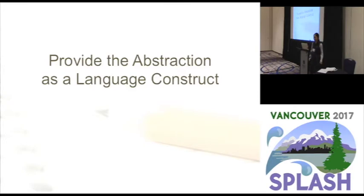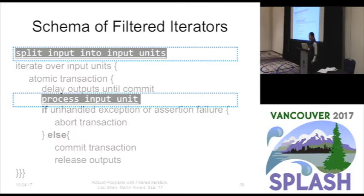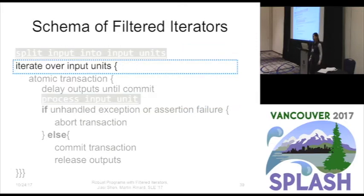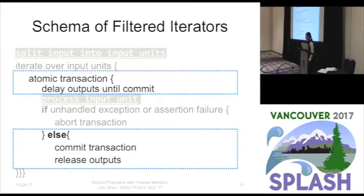The new language construct is called filtered iterators. To use it to process a sequence of input units, the developer does two things: first, specify how to split the input file into input units; second, how to process each input unit. Then the filtered iterator automatically iterates over the input units so that a program can process them one at a time, and uses a transaction to wrap around the processing code. If the processing succeeds, the transaction commits.